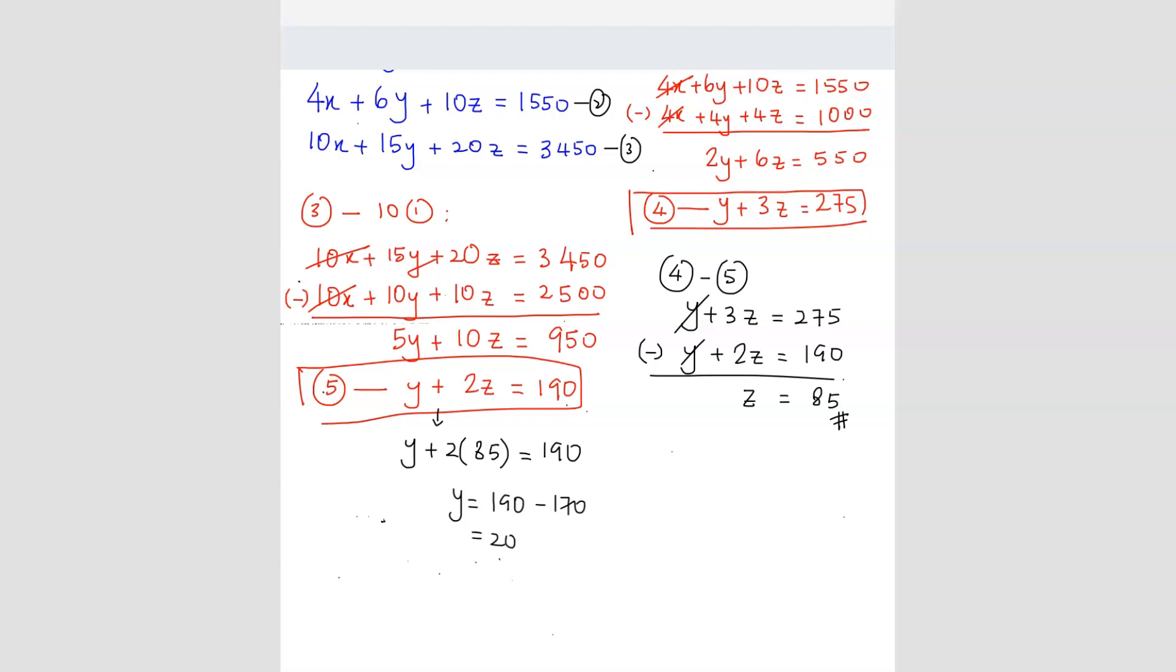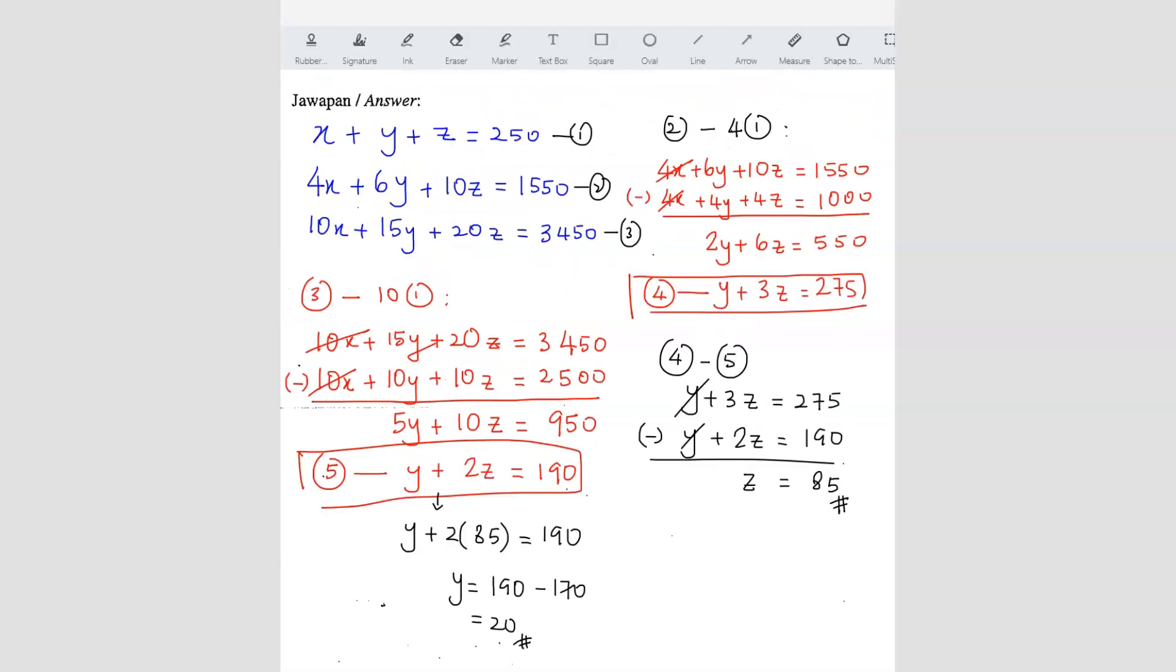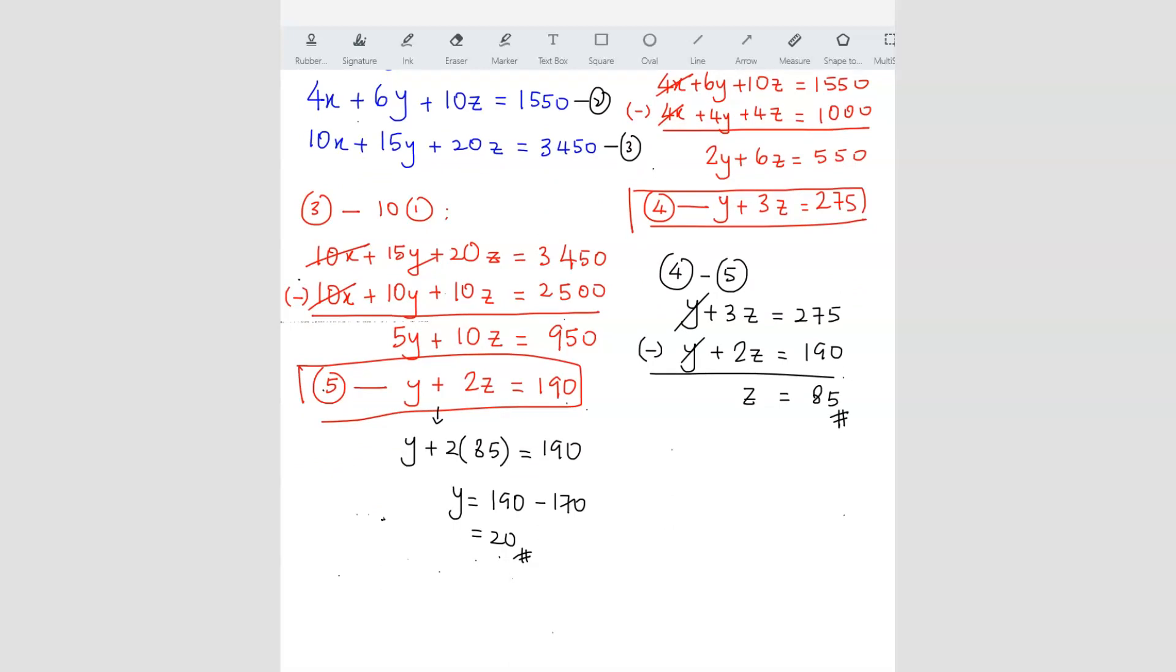Now we want to find x. We can use the first equation: x plus y plus z equals 250. We've already found y and z, so x plus 20 plus 85 equals 250. So the x value should be 145.